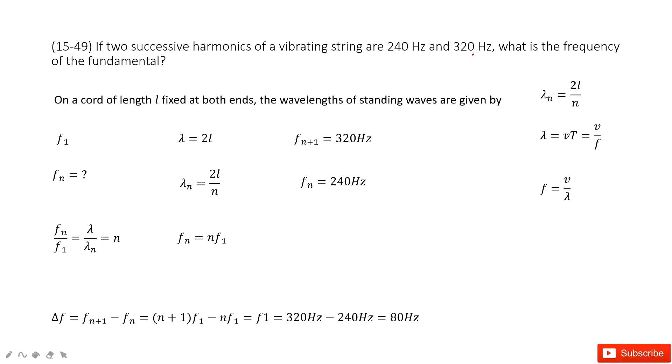So we consider the standing wave first. We can see a cord of length L fixed at both ends. For the standing wave at these two ends, if L is fixed, the wavelength of standing wave is given by this equation. This is learned in previous lectures. If there is one node, this is n equals 1, two nodes, n equals 2. This is how it works.